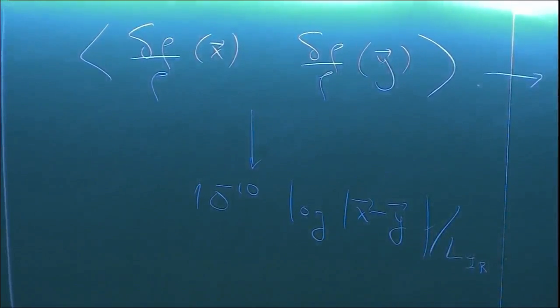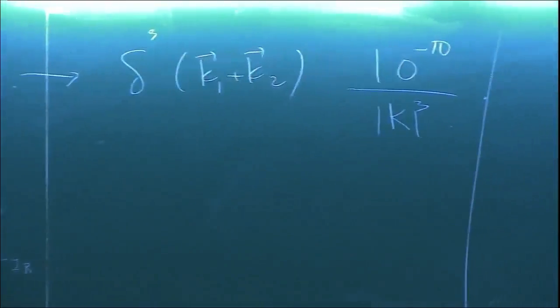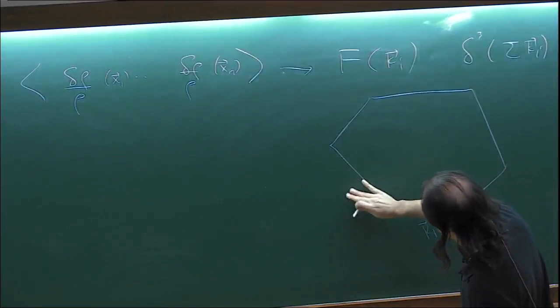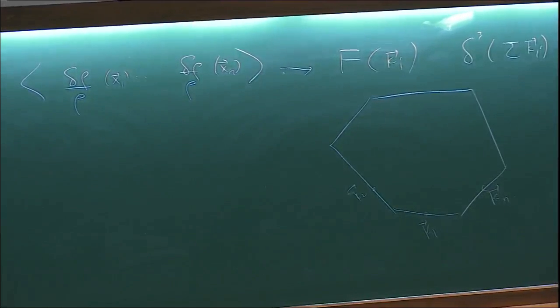In principle, we could talk about all kinds of n-point functions. They have not been measured yet, partially because these perturbations are so tiny. In momentum space, for an n-point function there's momentum conservation: k1, k2, k3, and so on, all add up to zero. So for every polygon you can draw in k-space, there is a number associated with it. Those are the spatial correlations we have in the pattern of density perturbations — there is an ocean of information in these objects.